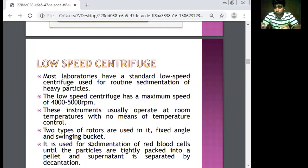It is used for sedimentation of red blood cells. Low speed centrifuge, these total speeds 4000 to 5000 RPM. RPM is a unit like we tell speed or acceleration unit. So centrifuge unit we tell this low speed centrifuge 4000 to 5000, and this instrument we can use at room temperature with two rotors: one fixed angle and another swinging bucket.